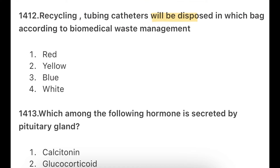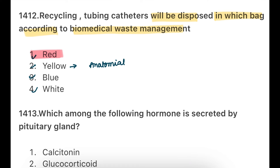Next question: Recycling tubing catheter — according to biomedical waste management (BWM), in which bag will it be disposed? Options: red bag, yellow bag, blue bag, or white bag? There are many questions from red and yellow. The answer is the red bag. If you ask about the yellow bag — yellow bag contains anatomical waste such as amputated parts and body parts. Remember: tubing catheter goes in the red bag.